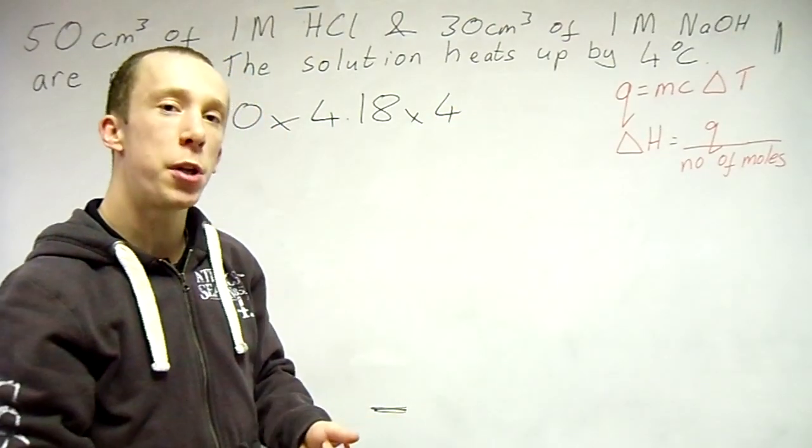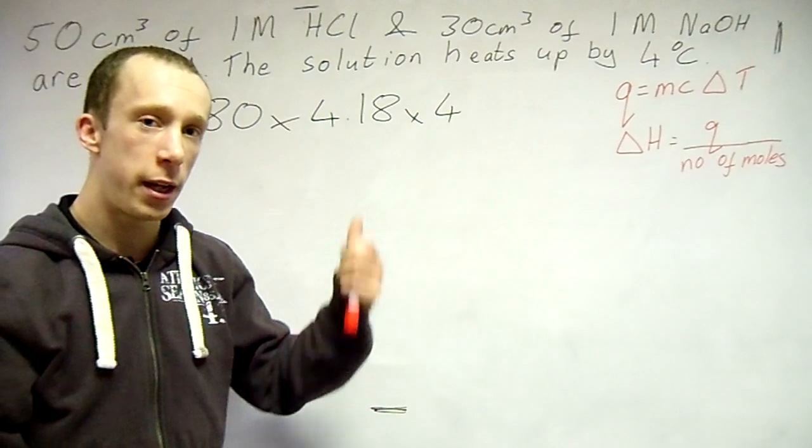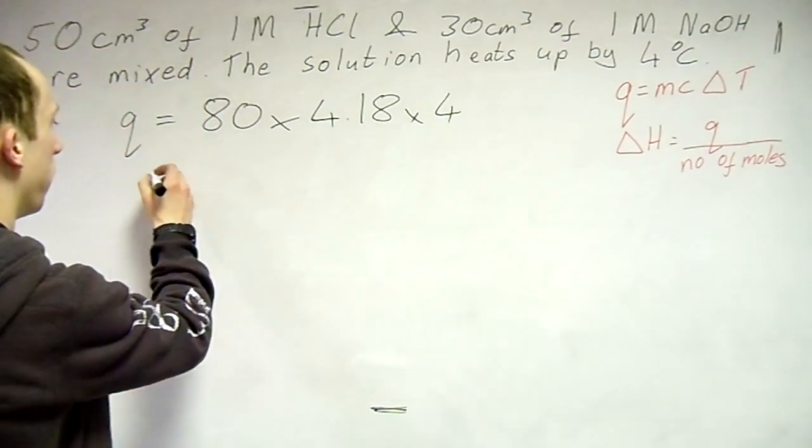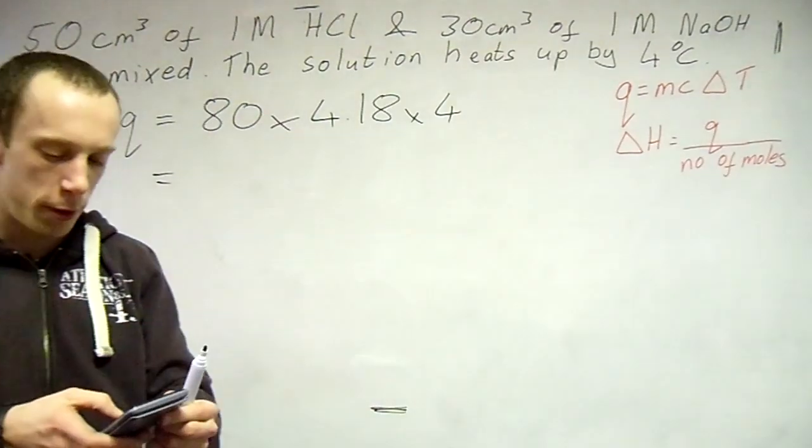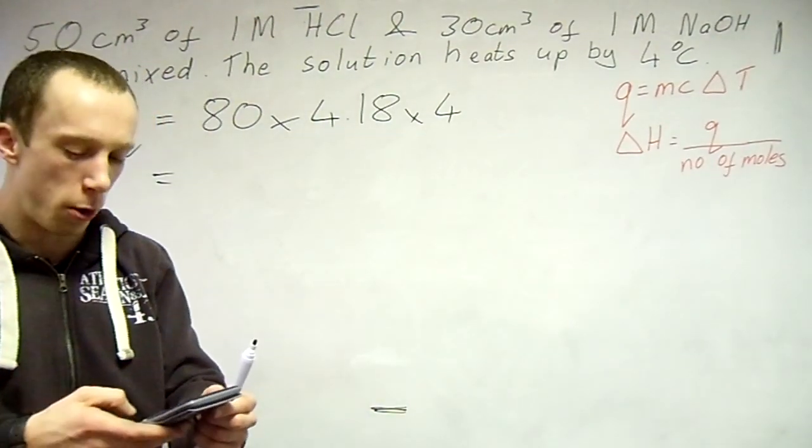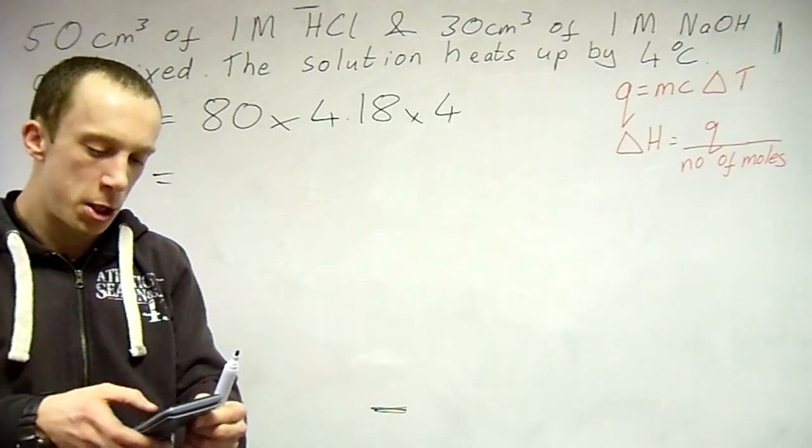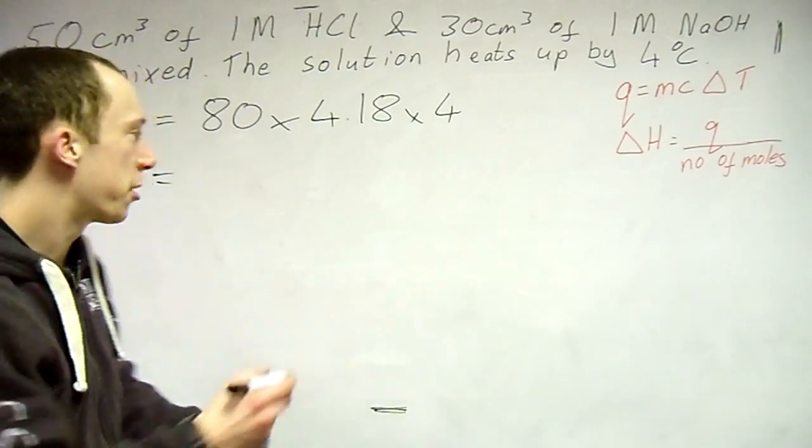So now you'll work out Q, the energy provided to the environment. Get out your calculator, punch these numbers in. So we've got 80 times 4.18 times 4 equals, so I've got an answer of 1,337.6 joules.